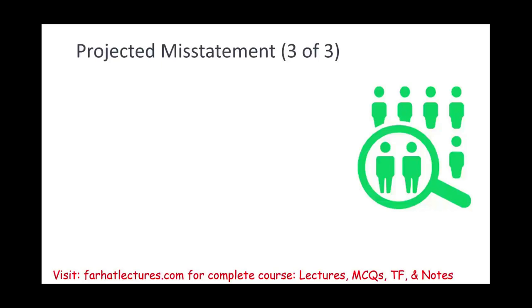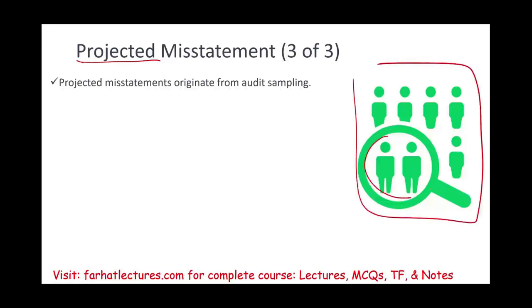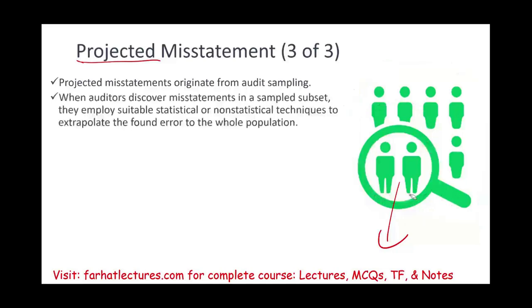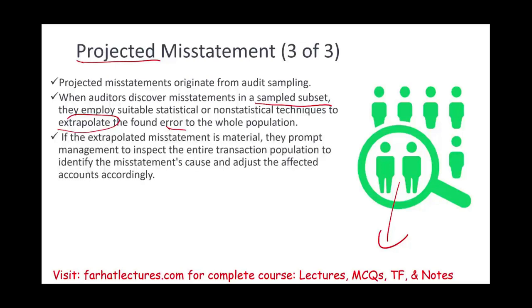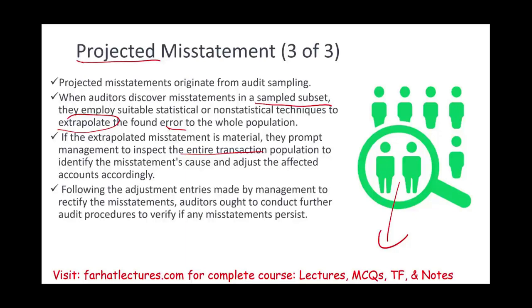We also have projected misstatement, which is the third type, and from the name projected, it comes from audit sampling. When you sample, you're going to project the error to the population. So if you have a whole population, you might only examine a small portion of it, and you're going to take whatever you found there and project the error to everyone else. When the auditor discovers a misstatement in a sampled subset, they employ suitable statistical or non-statistical methods to extrapolate the found error to the whole population. If the misstatement is material, they're going to tell management to inspect the entire transaction population to identify the misstatement cause and adjust the affected accounts accordingly.